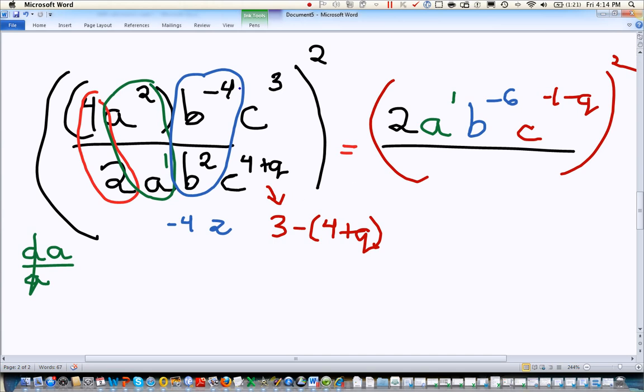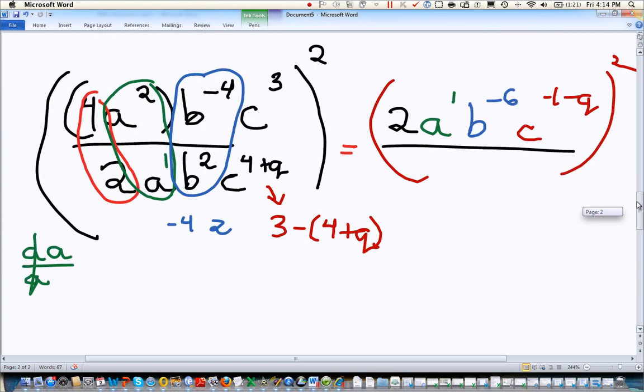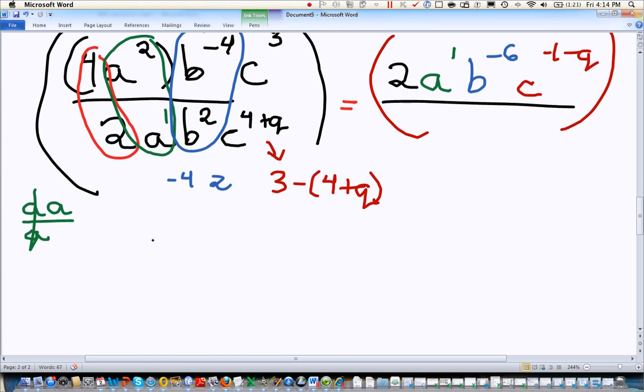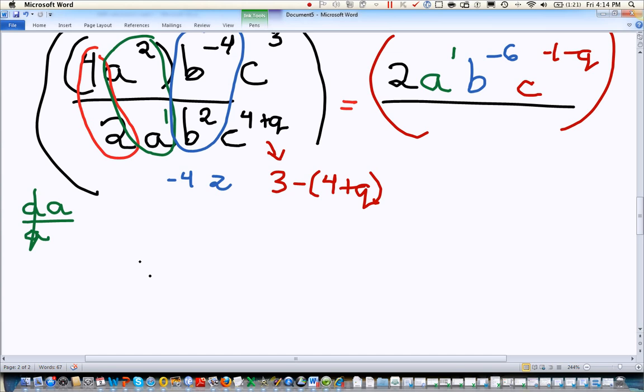Okay, before we deal with the squareds, we've got to deal with these negative exponents. Negative exponents we really are not all that fond of. Negative exponents really belong in the bottom. Okay, so I'm going to keep my 2a on top because they have positive exponents. 2a on top.